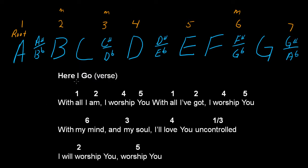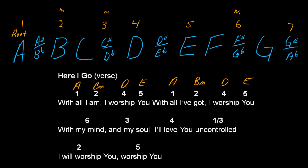One is A. Two is B minor — remember, twos are minor. Four is a major, it's a D. Five is a major, E — it's major because we're only using the basic three-note chords for now. So: one = A, two = B minor, four = D, five = E. Six is here — you can call it either F sharp or G flat, depending on the location on your instrument. For our purposes, we'll call it F sharp.